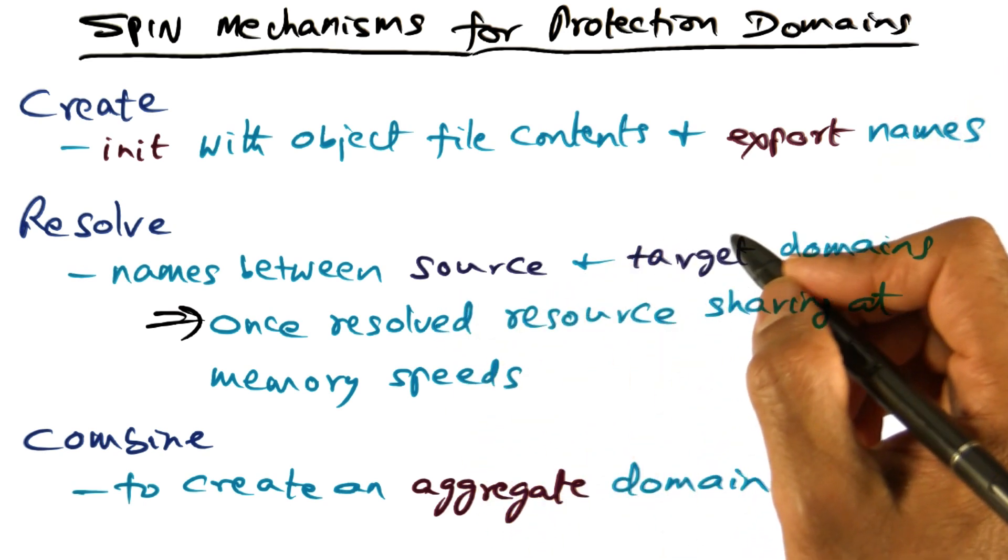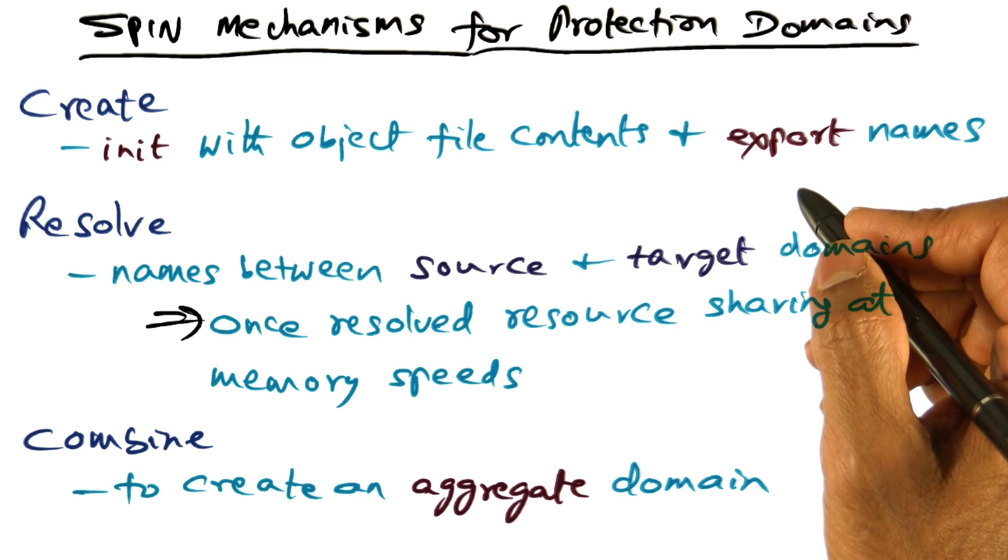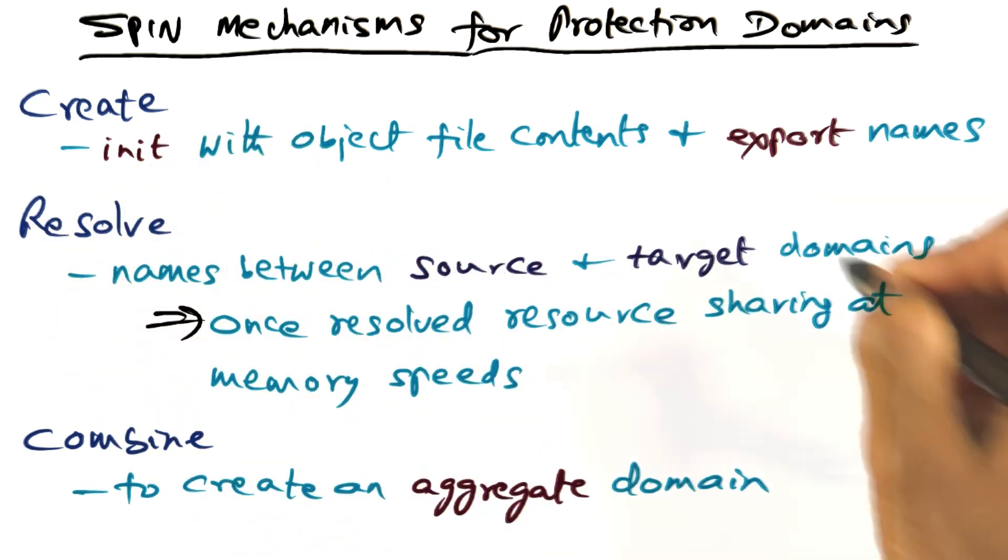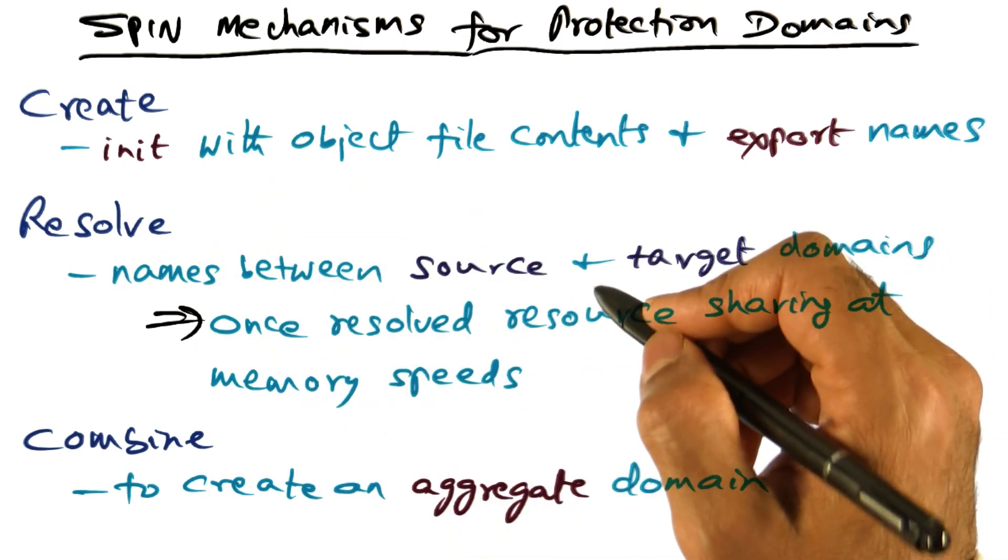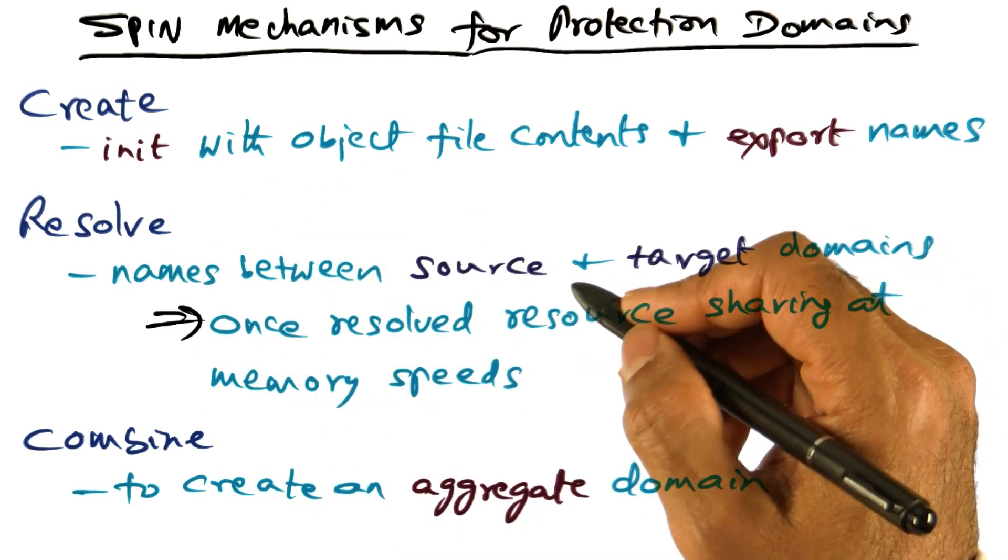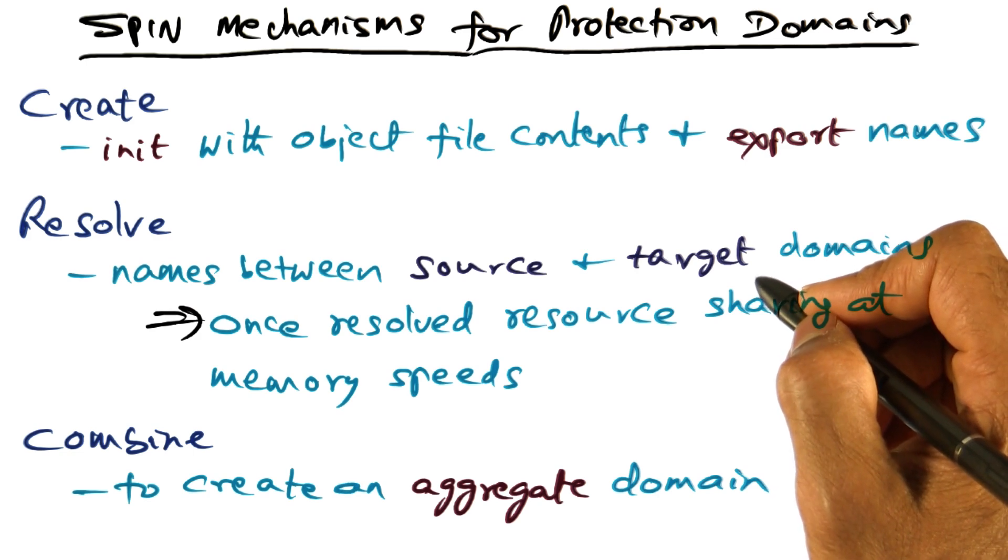If another logical protection domain wants to use the names that are exported, it can do so by using the SPIN mechanism resolve, which causes the dynamic binding of the source and target logical protection domains.